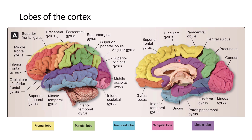This is the cingulate gyrus, part of the limbic system or limbic lobe. Other parts of the limbic lobe are also visible here — the parahippocampal gyrus, and the uncus is part of the parahippocampal gyrus. You can also see the lingual gyrus, part of the temporal lobe, the fusiform gyrus, and the inferior temporal gyrus.